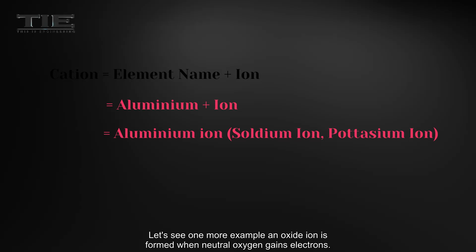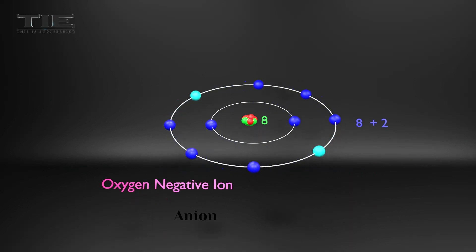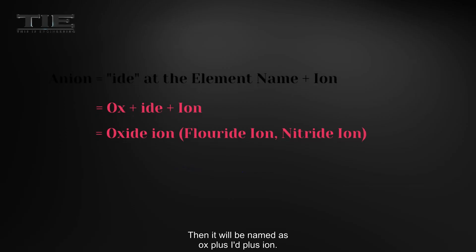Let's see one more example. An oxide ion is formed when neutral oxygen gains electrons. So it is an anion. Then it will be named as ox plus ide plus ion.